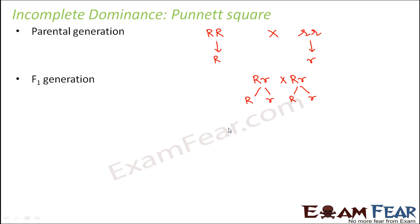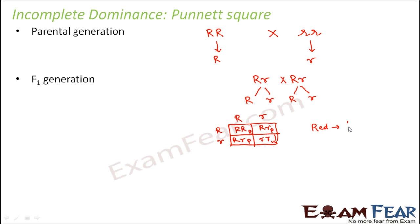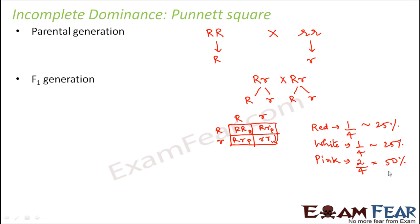The F1 capital R small r is crossed with capital R small r, giving gametes capital R and small r on both sides. Drawing the Punnett square and filling in the combinations, the output is: capital R capital R (red), capital R small r (pink), capital R small r (pink), and small r small r (white). So we see one red flower out of four — that is 25%. The white flower is also one out of four — 25%. The pink flowers are two out of four — 50%.